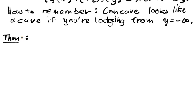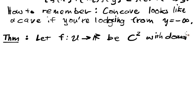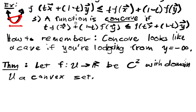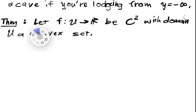Now we can relate concavity and convexity to the Hessian. So let F from U into R be C^2 with domain U a convex set. And of course we need convexity to even ask if this inequality works because if these points don't exist then we can't really talk about anything. That's why we need to define convexity.